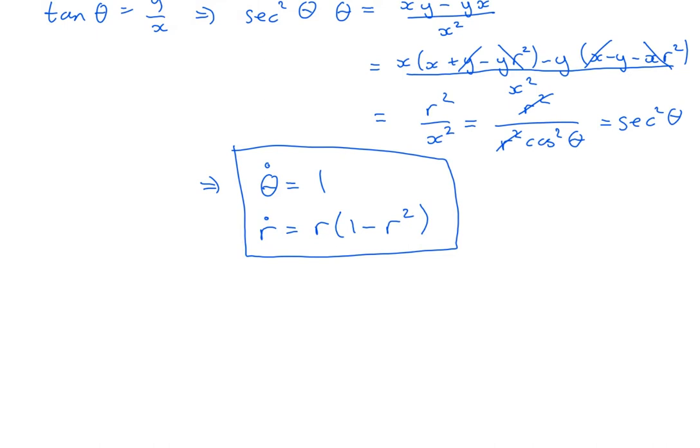Theta dot is 1, that just means the angle increases at a constant rate. The r equation has some fixed points. When the right-hand side is 0, r equals 0 and r equals 1. So I immediately get that when r equals 0, it stays 0, that's a fixed point at the origin. And when r equals 1, the radius stays at 1, but the angle increases at a constant rate.